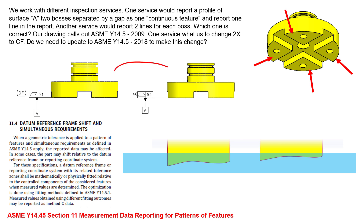We're going to compare two examples which have the same interpretation. The continuous feature symbol is a rather new symbol that was introduced in 2009 and has continued to be used in the 2018 standard. There's some confusion as to when you can begin to use the continuous feature on flat planar surfaces. The confusion arises when the standard explicitly says you can apply the continuous feature to features of size such as cylinders — that's how the definition in the 2009 standard starts. But at the bottom of the 2009 standard, they also apply this symbol to flat planar surfaces.